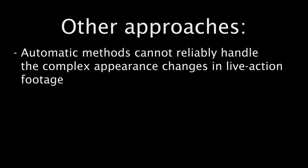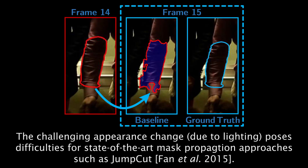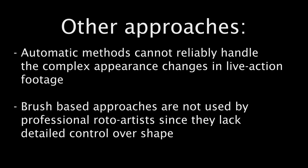Other approaches to video segmentation include automatic methods. These are often challenged by the complex appearance changes in live-action footage, and therefore unreliable. Here is an example of a recent state-of-the-art mask propagation method. The lighting changes and shadows created pose difficulties for appearance matching. If automatic methods fail, we must rely on artist involvement. Rather than rotosplines, brush-based methods have been proposed, but these are not used by professional artists since they do not provide detailed control over shape.